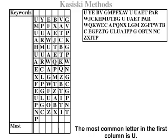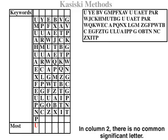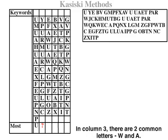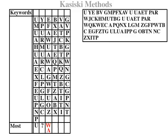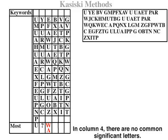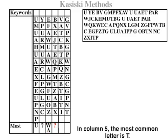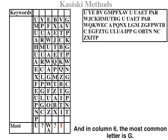The most common letter in the first column is U. In column 2, there is no common significant letter. In column 3, there are 2 common letters: W and A. In column 4, there are no common significant letters. In column 5, the most common letter is T. And in column 6, the most common letter is G.